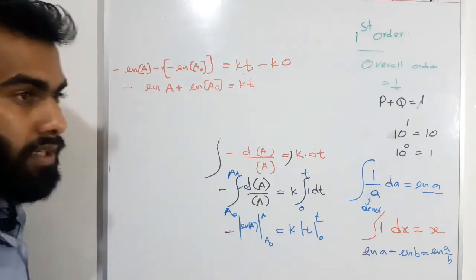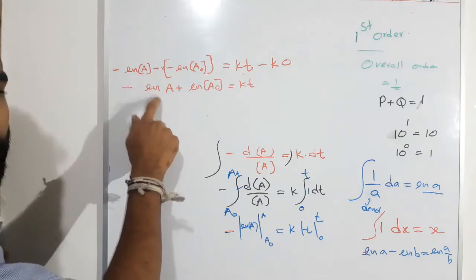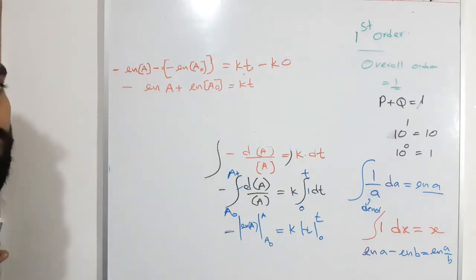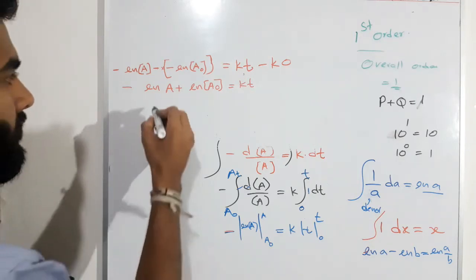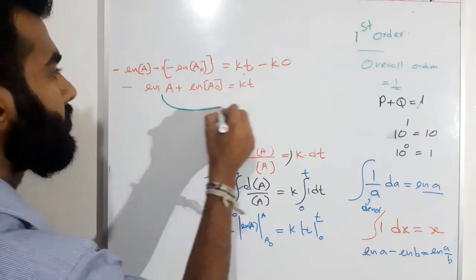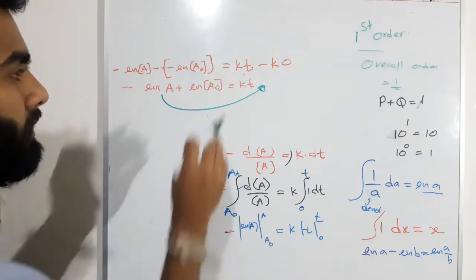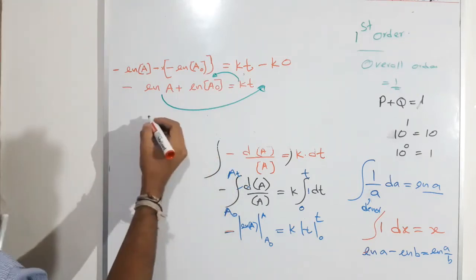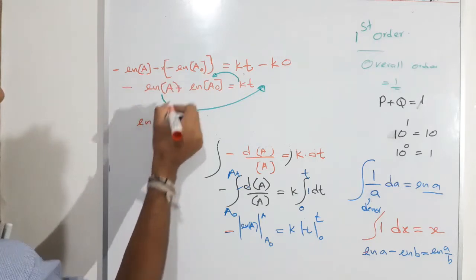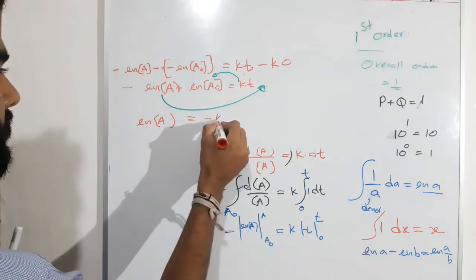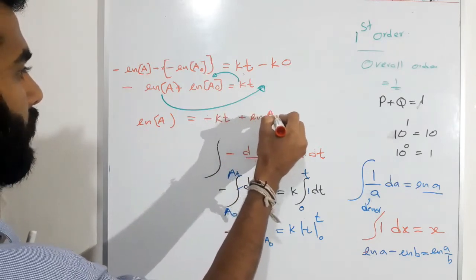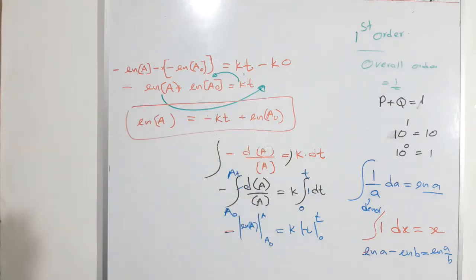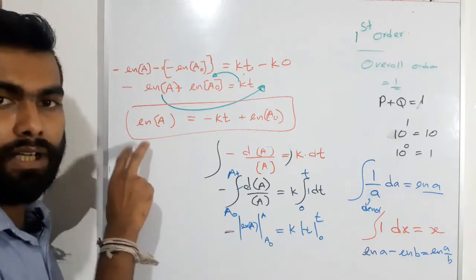Now we want the equation with respect to A. This ln term contains a negative sign; we have to convert it to a positive sign. I will rearrange this equation by moving the ln A term to the right side and KT to the left side. The answer is: ln A equals minus KT plus ln A₀. This is the integral form — the integrated rate law of a first order reaction.